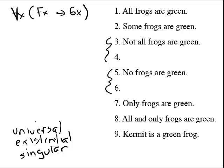Now, next sentence. Some frogs are green. Universal, existential, or singular? Clearly existential sentence. So we put an existential. Existentials go with ampersands. We get fx, ampersand, gx. There is an x. X is a frog, and x is green.